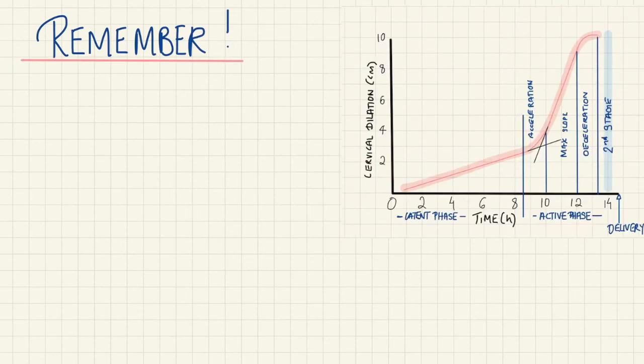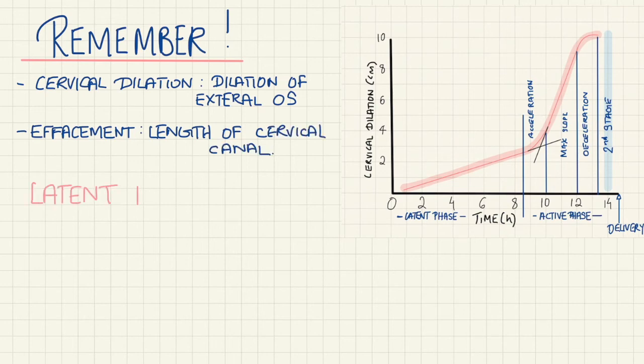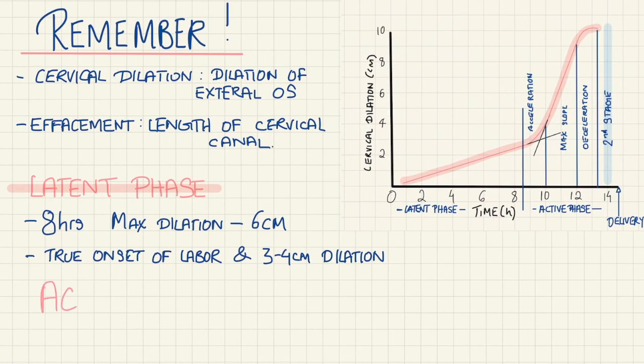Remember: cervical dilation relates to dilation of the external os measured in centimeters. By the end of first stage, there's usually dilation of 10 centimeters. Effacement is determined by the length of the cervical canal. Both can be split into latent phase and active phase. Latent phase is eight hours with maximum dilation of six centimeters - the period between onset of true labor pain and cervical dilation.